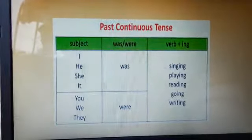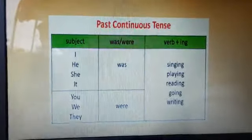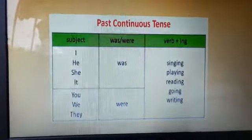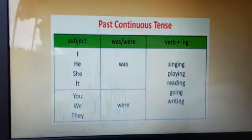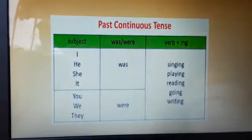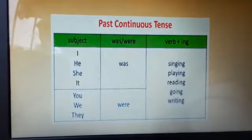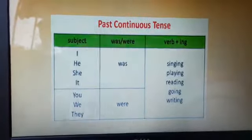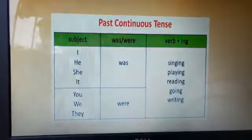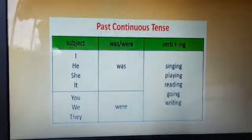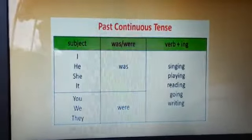So the verbs will be changed — for example, 'sing' will be changed into 'singing', 'play' will be changed into 'playing', 'go' will be changed into 'going'. Like this, we add '-ing' with the main form of the verb.